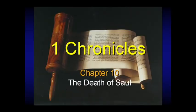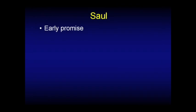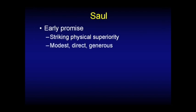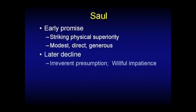So let's jump in with chapter 10. It's the only chapter in Chronicles dealing with Saul — it's sort of just cleaning up the past. Saul had early promise: good looking, sharp, solid, striking physical superiority. He was modest at first, direct, generous. But then he declines. He gets to be very irreverent, very presumptuous, and very willful — goes from bad to worse. He ends up being disobedient to God's instructions and indulges in deceit.